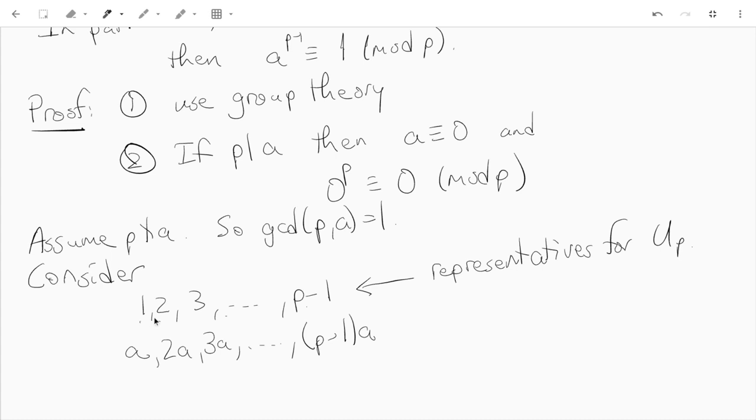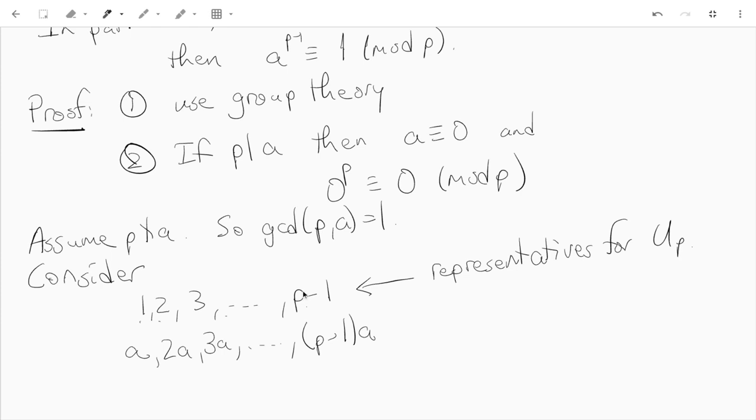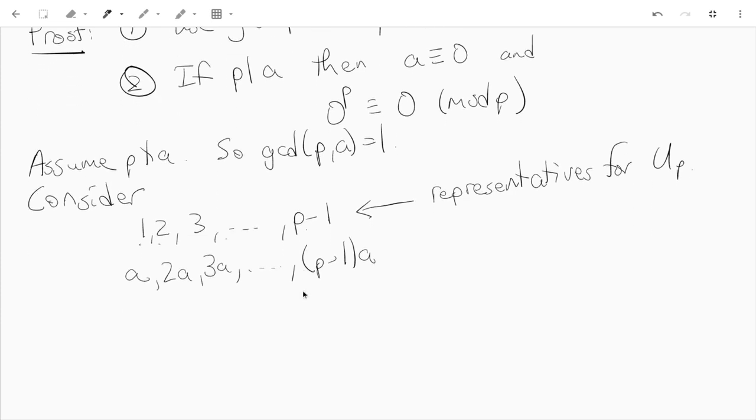In other words, every congruence class that is invertible mod p is represented by one and only one of these integers. And our claim, we want to claim that this second row is also a complete set of representatives for Uₚ.